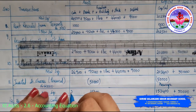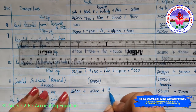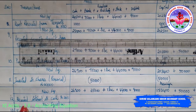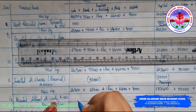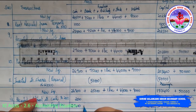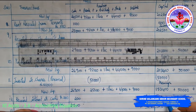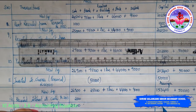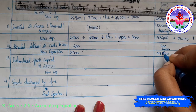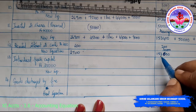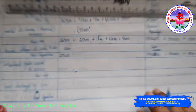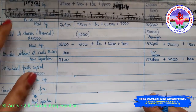Twelfth transaction: received interest in cash rupees 200. It is income — it increases the cash balance to 27,100, and since it is income it increases capital also. Capital becomes 1 lakh 53,400 plus 200 which is 1 lakh 53,600. All other balances remain: creditors 50,000, security deposit 1,500, bank 25,000, furniture and building 1 lakh, stock 44,000, debtors 9,000.